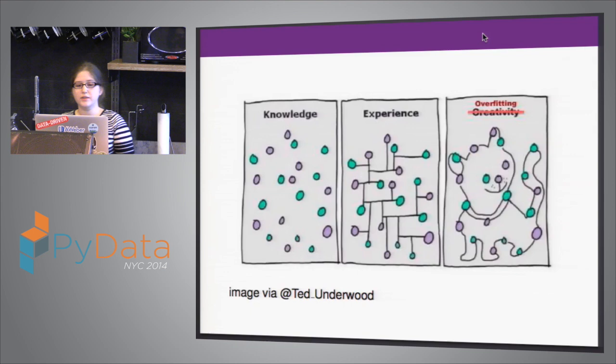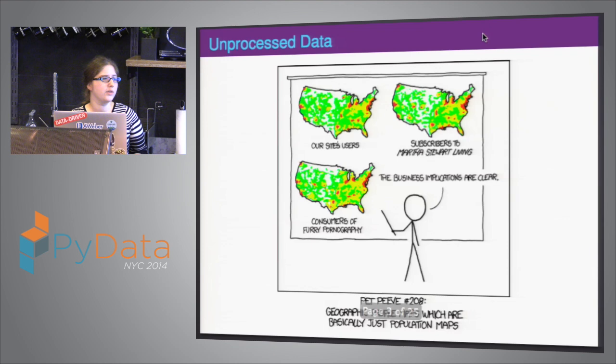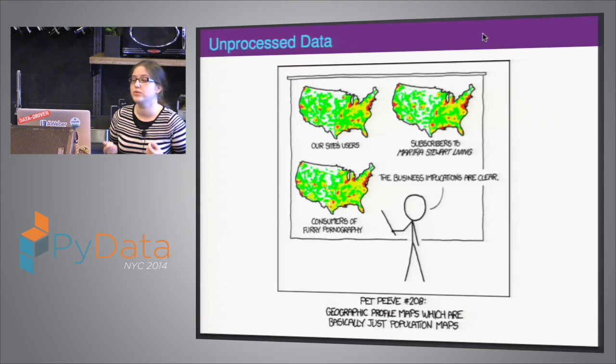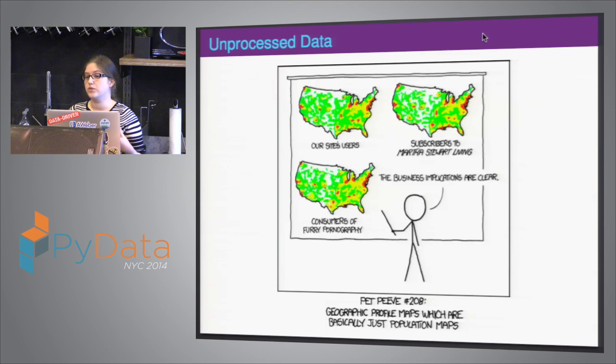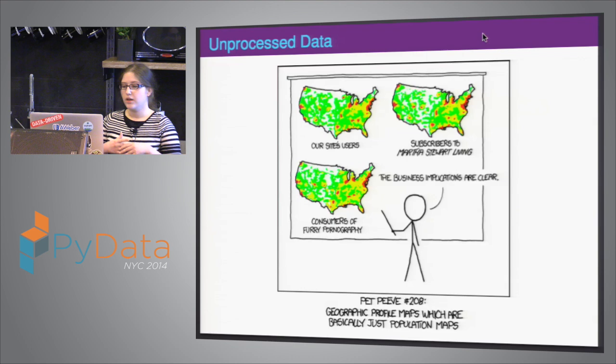So what can actually go wrong with our data? We've all seen the XKCD example where we forget that it's geographic data — if you do raw geographic data and don't normalize, you'll end up with geographic data. You need to understand if your data needs to be normalized, needs to be mean subtracted, or needs some kind of processing to accurately represent what you're trying to look for.